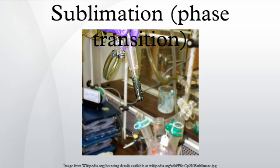Sublimation is the transition of a substance directly from the solid to the gas phase without passing through an intermediate liquid phase. Sublimation is an endothermic phase transition that occurs at temperatures and pressures below a substance's triple point in its phase diagram.